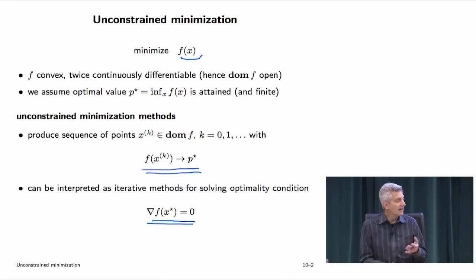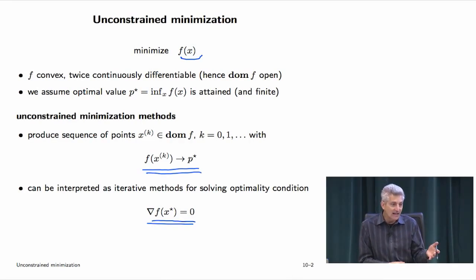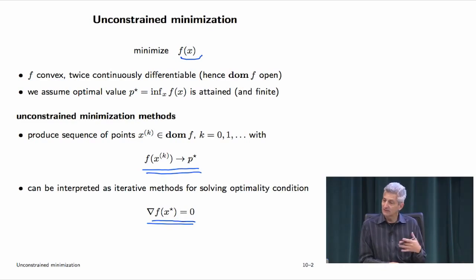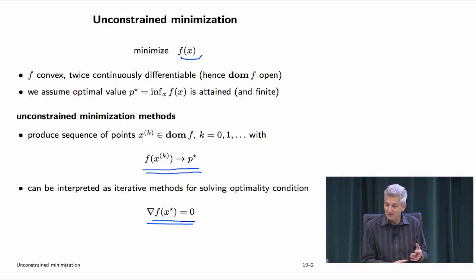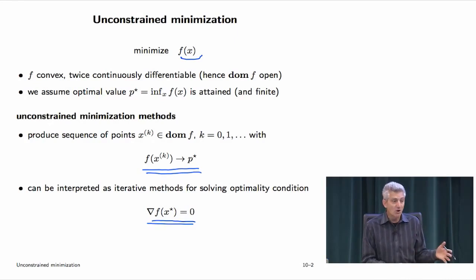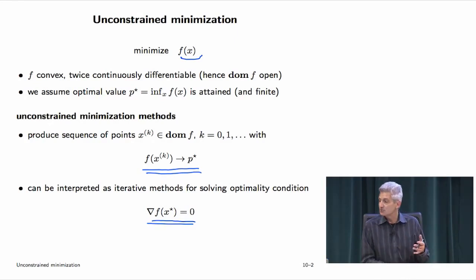We're going to look almost exclusively at iterative methods. There are a handful of problems with an analytical solution — one important example is least squares, where you don't need an iterative method. Minimizing a least squares problem is linear algebra, because the optimality condition — gradient equal to zero — is a set of linear equations. But we're mostly interested in cases where that's not true, and you'll need an iterative method.